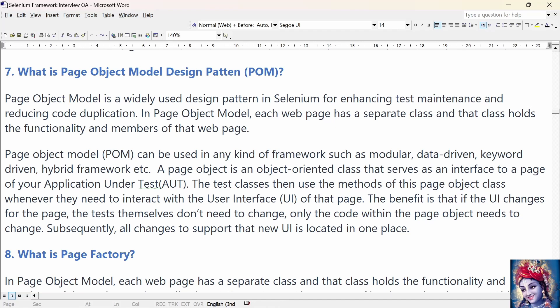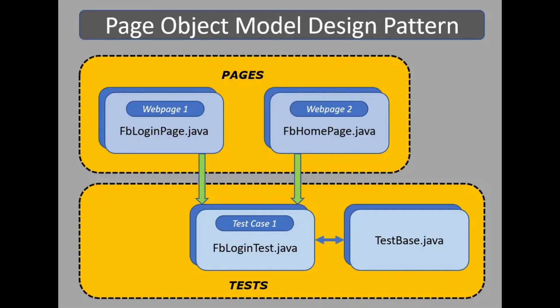What is Page Object Model design pattern? Page Object Model is a widely used design pattern in Selenium for enhancing test maintenance and reducing code duplication. In Page Object Model, each web page has a separate class that holds the functionality and members of that page. It can be used in any kind of framework such as modular, data-driven, keyword-driven, and hybrid-driven. It is an object-oriented class that serves as an interface to a page of the application under test. The benefit is that whenever there is a change in the UI, only the code within the Page Object needs to change — all changes are located in one place.